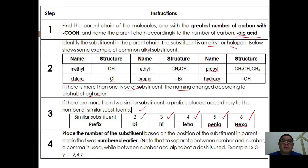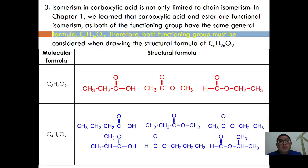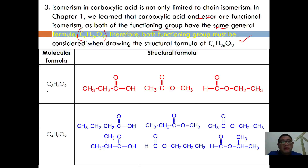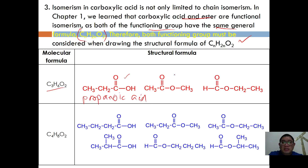Isomerism in carboxylic acid is not limited to chain isomerism. Carboxylic acids and esters are functional isomers because both functional groups share the general formula CₙH₂ₙO₂. Therefore, when naming isomers for a given formula, you must consider both carboxylic acids and esters. For example, C₃H₆O₂ includes propanoic acid, methyl ethanoate, and ethyl methanoate.